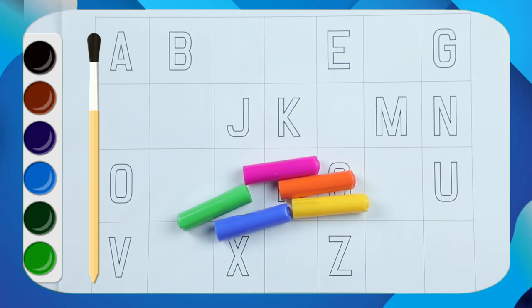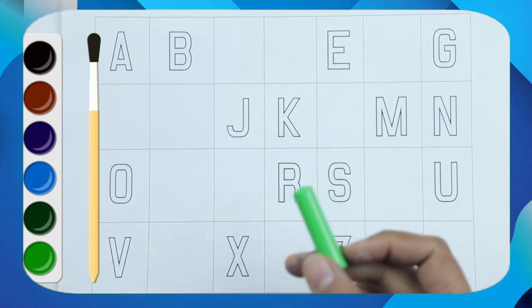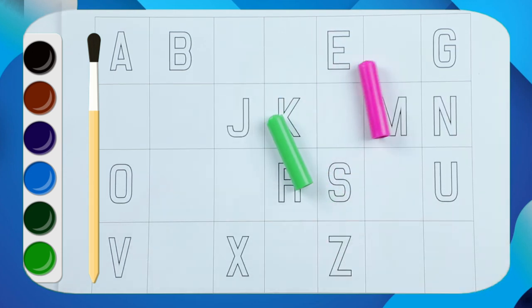Hello friends, today we learn alphabets with filling the blanks A to Z with some colors: green color, pink color, yellow color, orange color, blue color. Let's start!